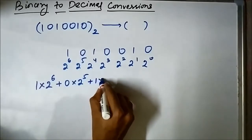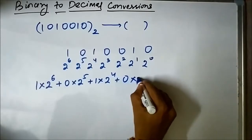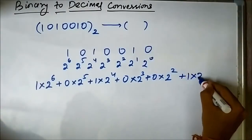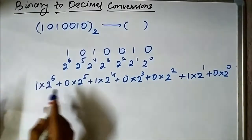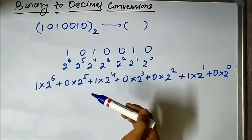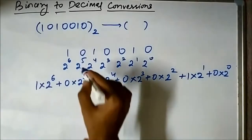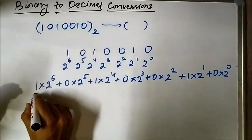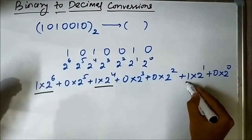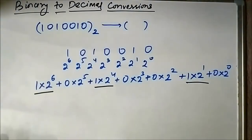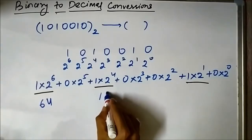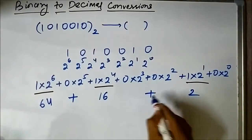Continuing the calculation: 1 × 2⁴ + 0 × 2³ + 0 × 2² + 1 × 2¹ + 0 × 2⁰. We can ignore zeros — only multiply weights that have a 1 associated with them. So it simplifies to 1 × 2⁶ + 1 × 2⁴ + 1 × 2¹, which is 64 + 16 + 2 = 82.